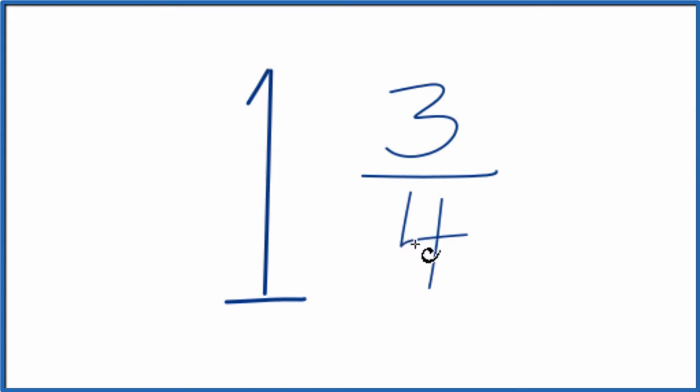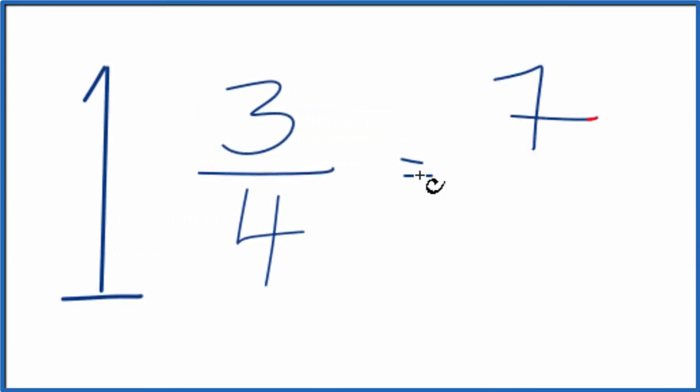So we'll take one times four, that's four, and add it to three. That'll give us seven. And then we put that over four. So one and three-fourths, that's equivalent to seven over four.